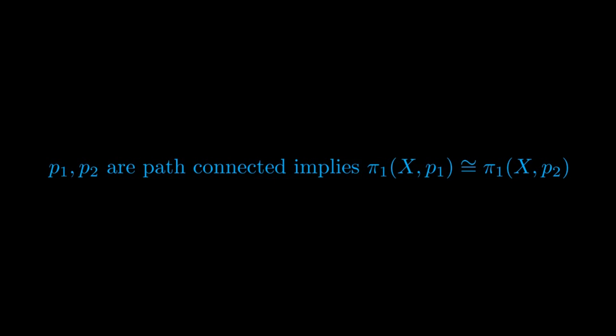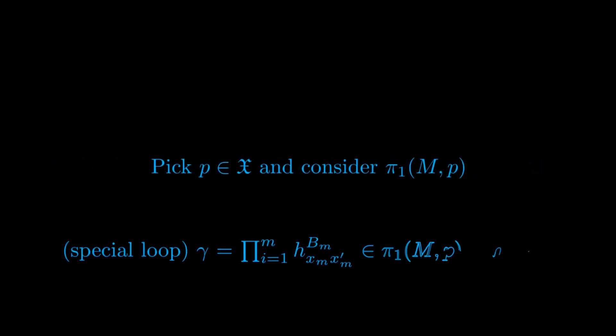Thus, we can pick a point P from our set X from before and consider the fundamental group of our manifold M, based at P. This is because, just one point from each path-connected component, by our previous consideration, will contain enough information.